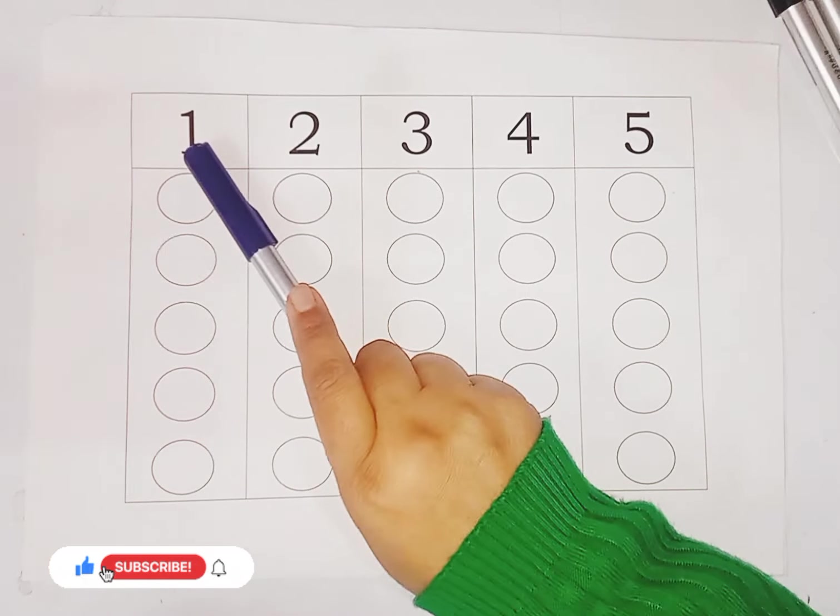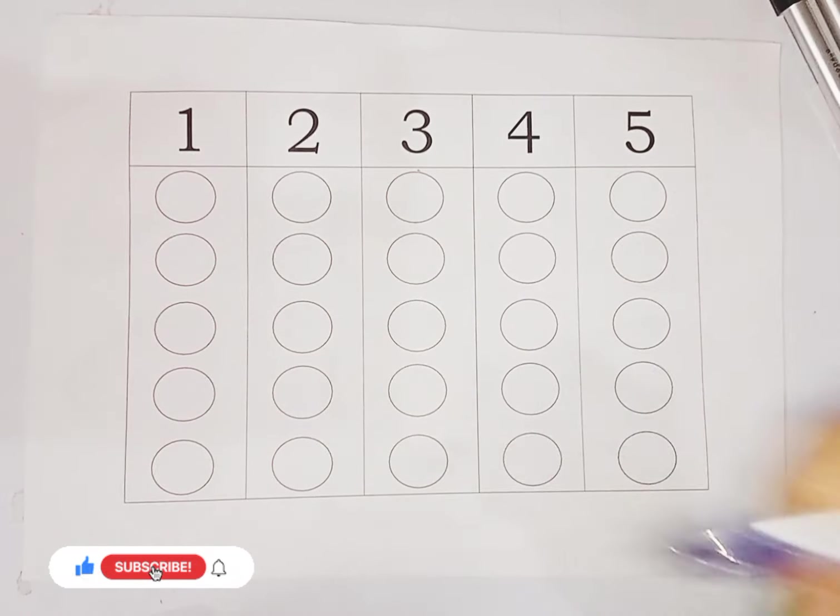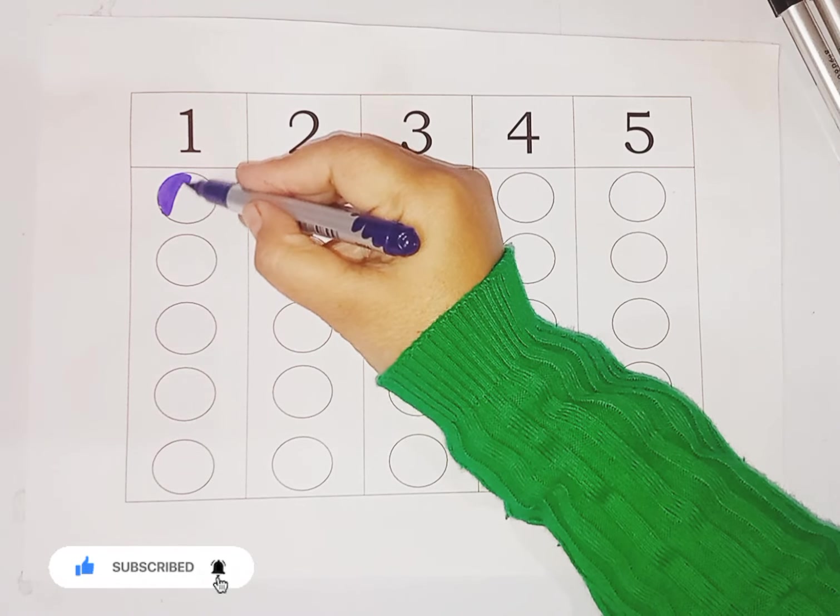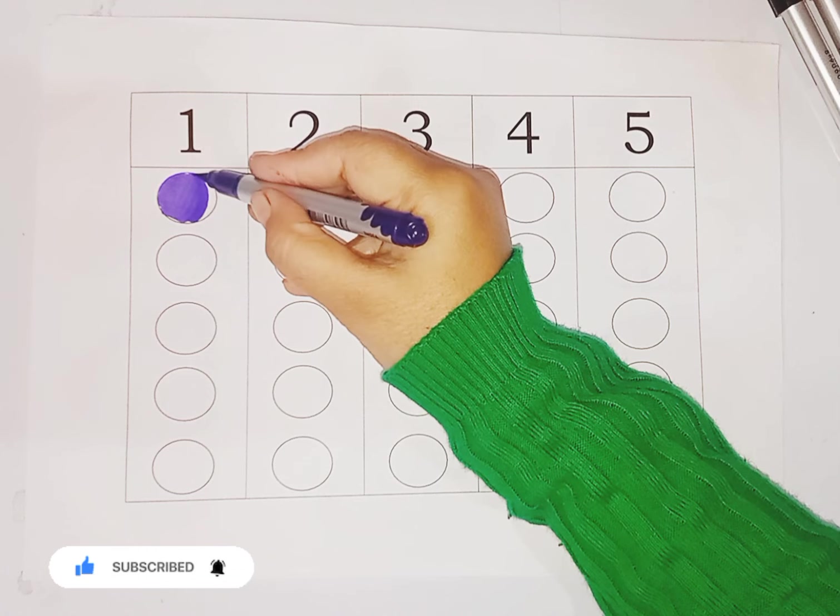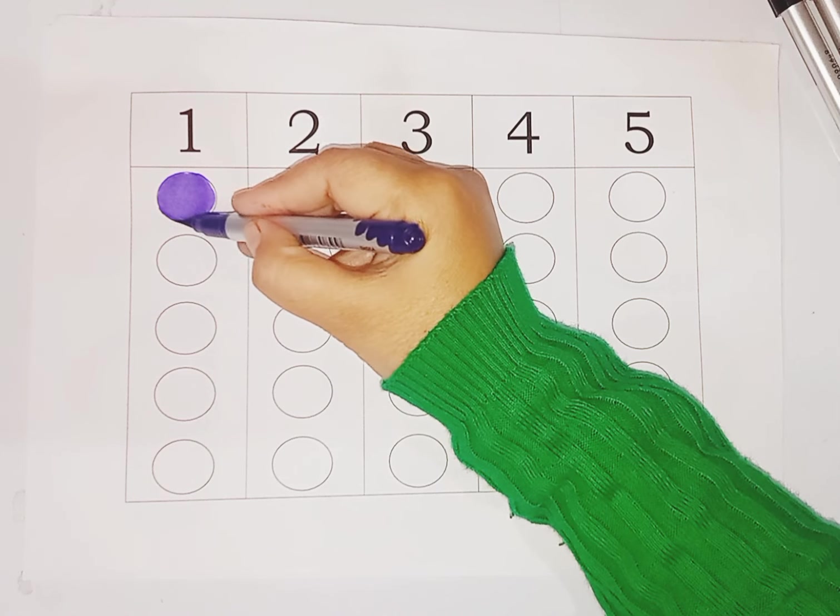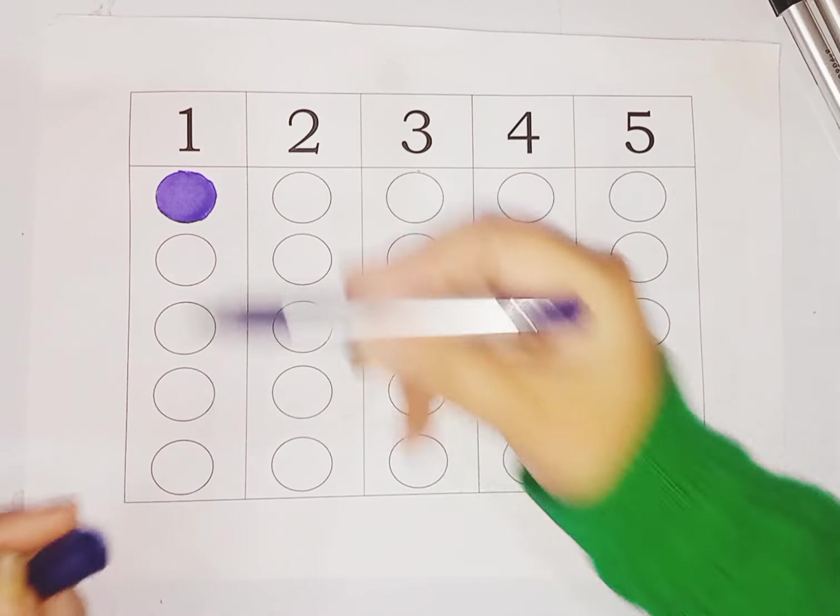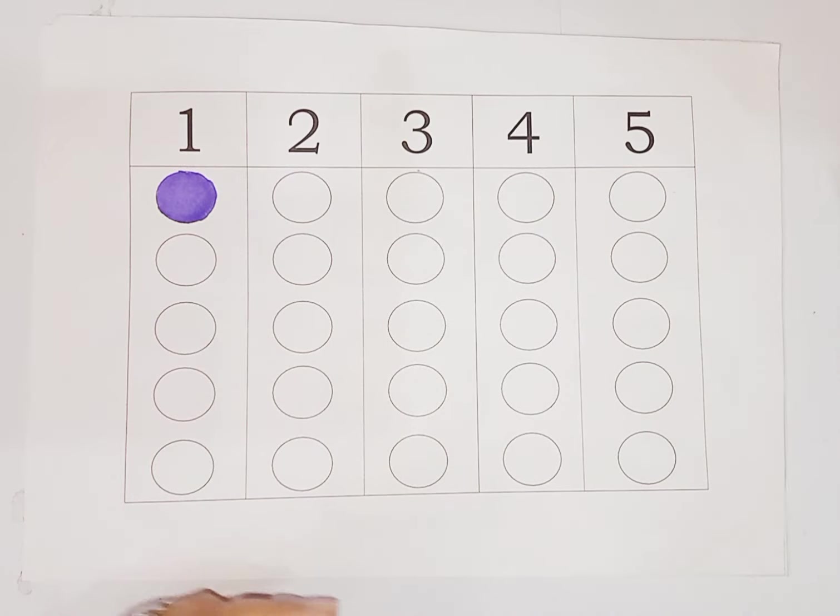So kids, we have one number. Violet color. We color in one circle. One number, one circle.